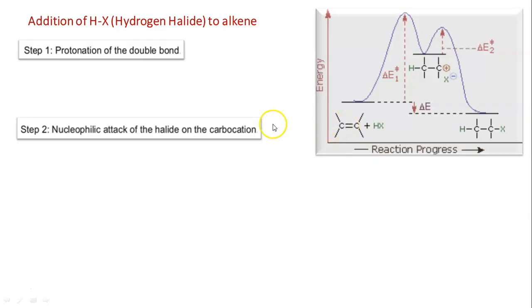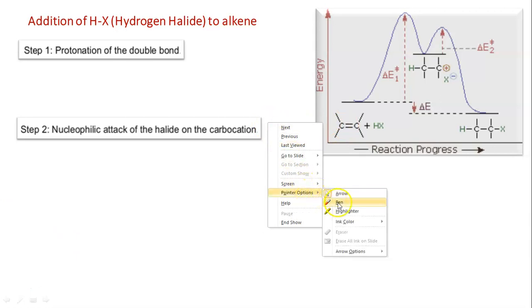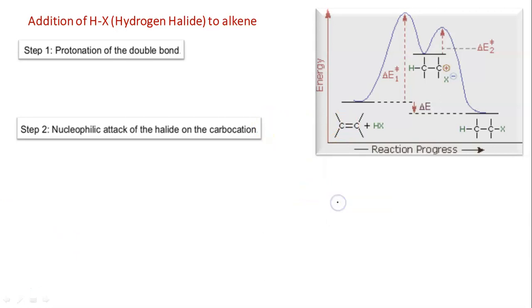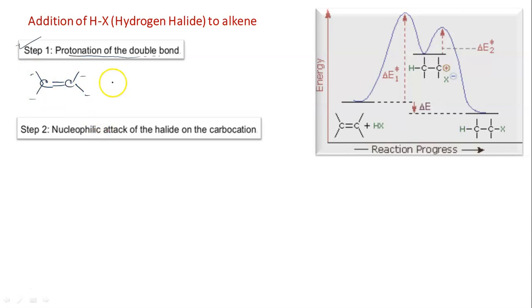Here we will first see the addition of HX, that is any hydrogen halide. It may be HBr, it may be HCl. So it is in general. The first step is the protonation of the double bond. Here we will take a general structure - there may be any groups, not just methyl groups. This is the structure of any general alkene.